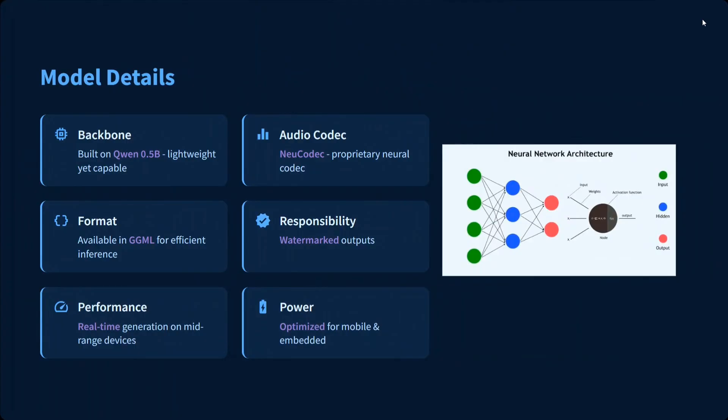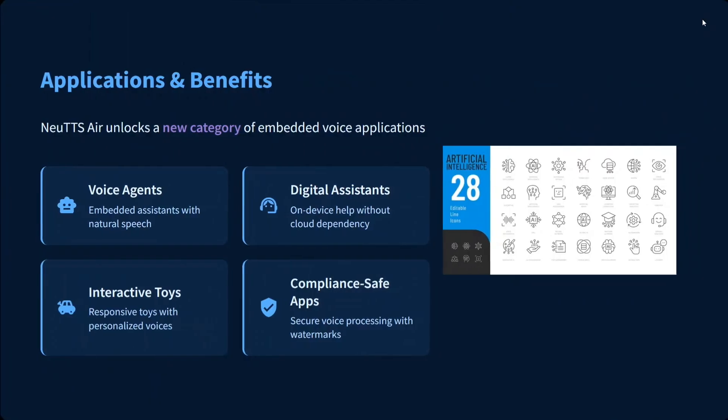What are the model details? It uses a Qwen 0.5 billion parameter model and a new audio codec. The format is GGML. It also provides watermarks in the audio so it can't be misused and is traceable — do keep that in mind. For real-time generation, it is optimized for mid-range devices and mobile applications, making it suitable for local voice agents, digital assistants, toys, compliance-safe apps, and more.